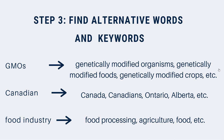Using the example we created earlier, we have three keywords: GMOs, Canadian, and Food Industry. For GMOs, we've written down genetically modified organisms, which is what GMO stands for. We've also included genetically modified crops and genetically modified food, which are related terms. For Canadian, we've written down Canada and Canadians, which are alternative spellings. We've also written down the names of different Canadian provinces and territories, which are narrower terms. Finally, for Food Industry, we've written down food processing, agriculture, and food. Take some time and think carefully about these words. If you're having trouble, look at your class notes and readings including any textbooks, use a thesaurus, or ask your instructor or a library staff member for help.